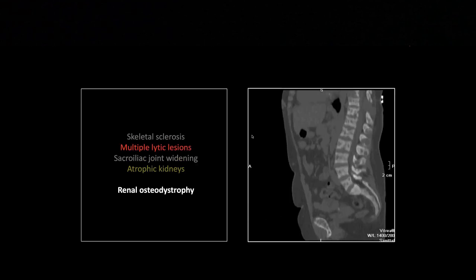That happens in the sacroiliac joints, it also happens in the pubic symphysis. On the sagittal, we've got the banding appearance of a rugger jersey spine. You can see the end plates - the bone immediately under the end plates is a little denser, and there's a hypodense stripe going through the center of each vertebral body. That's a rugger jersey spine.